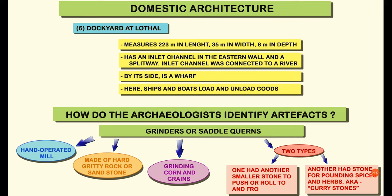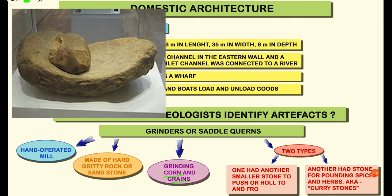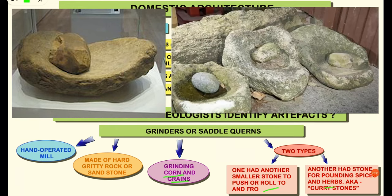How do archaeologists identify artifacts? To process food, the Harappan people used grinders and pots for mixing, blending, and cooking. These grinders and pots are made of stone, metal, and terracotta found at various Harappan sites. Grinders and saddle corns are hand-operated tools made of hard gritty rocks and sandstones, mainly used for grinding corn and grains. There are two types of grinders discovered at Harappa: the first uses a smaller stone pushed to and fro; the second has an additional stone for pounding spices and herbs, also called curry stones.